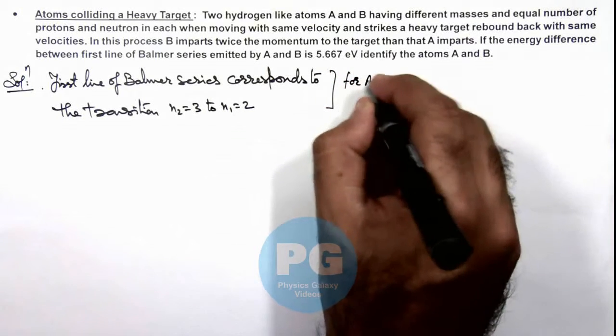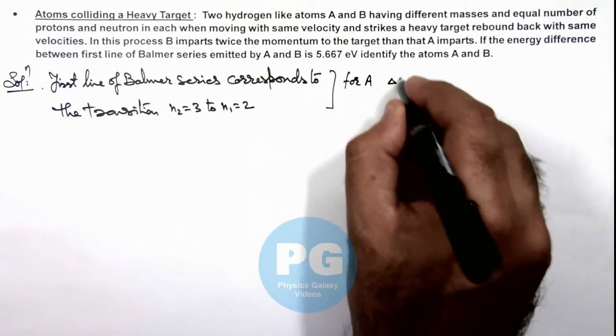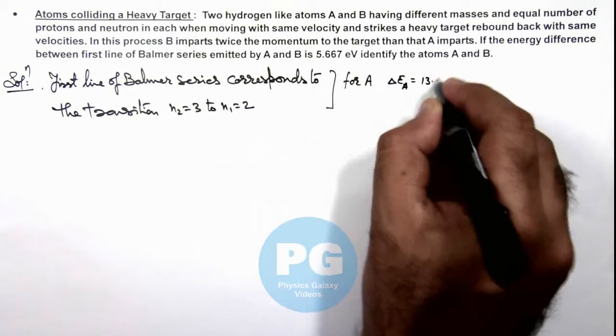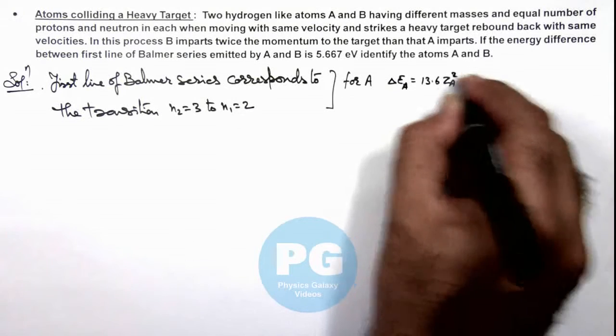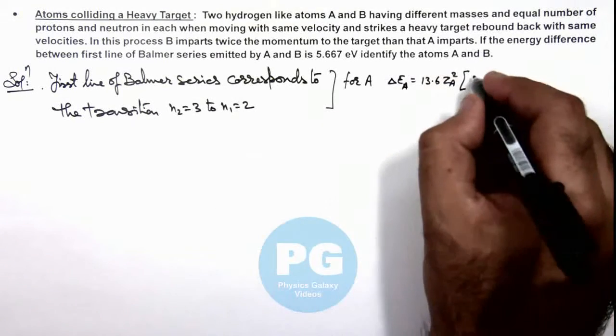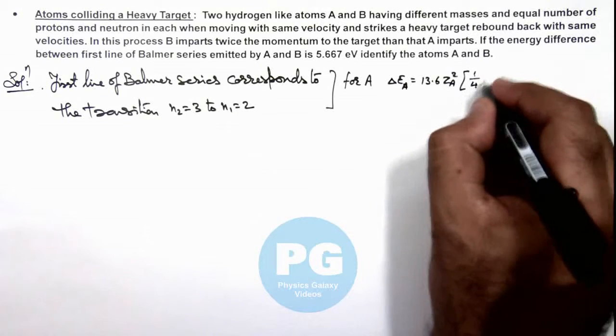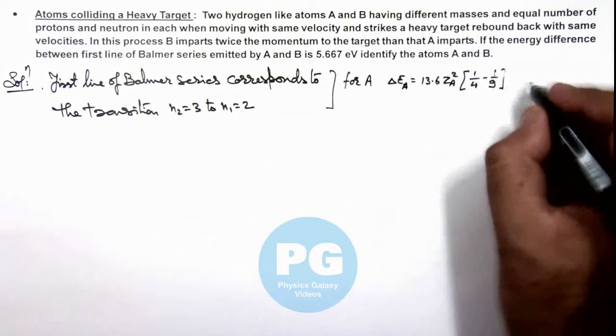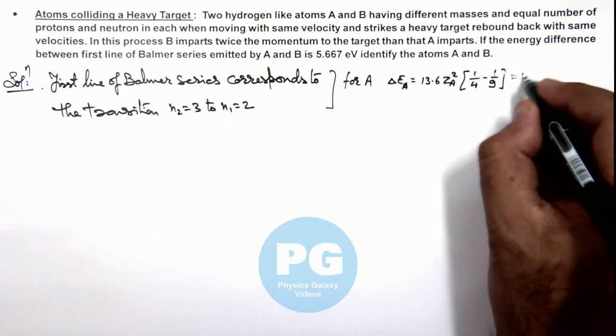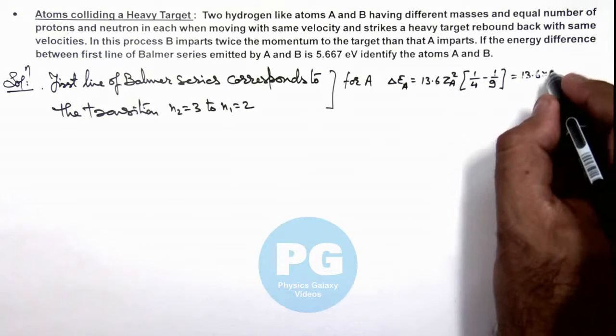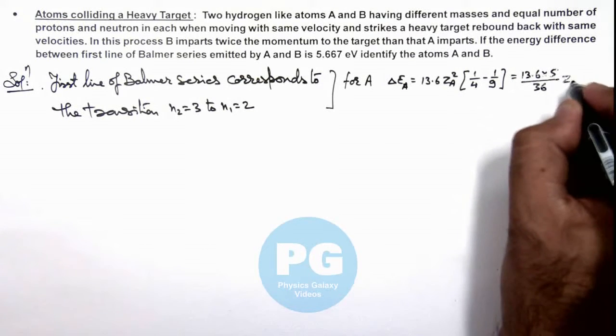For A, we can write ΔEₐ is equal to 13.6 Zₐ² multiplied by, as it is transition from 3 to 2, we can write it 1/2² - 1/3². On simplifying this is giving us 13.6 multiplied by 5/36 times Zₐ².